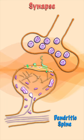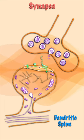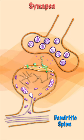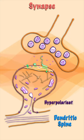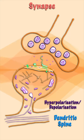When the action potential arrives, the neurotransmitters are released and they will go and bind to their receptors. This binding will either hyperpolarize or depolarize the membrane of the post-synaptic neuron, and thus inhibit or excite the neuron.